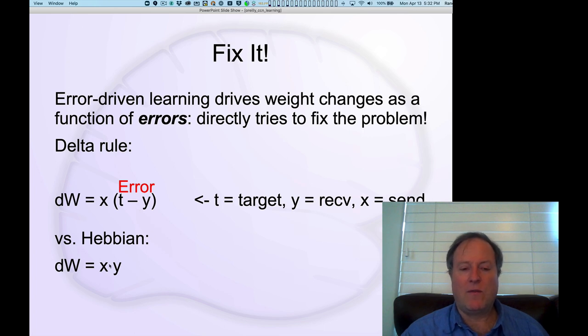You can compare that with the Hebbian learning rule, where the change in weight is proportional to the sending activity times the receiving activity directly. It's a very similar mathematical expression, but you're learning as a function of the mistakes instead of just the raw activity itself.